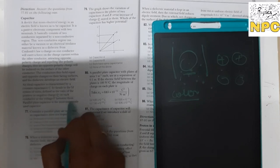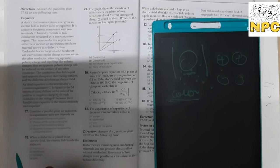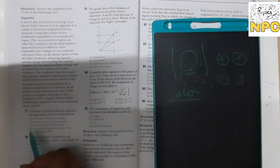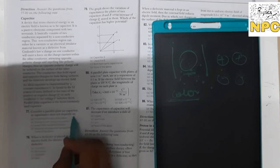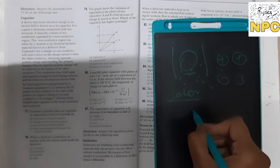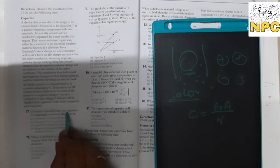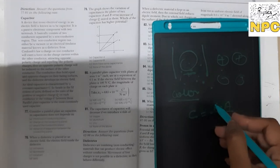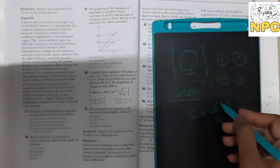The parallel plate capacitor is the most commonly used capacitor. For a parallel plate air capacitor, the capacitance formula is C equals epsilon-naught times A divided by D. When air is the medium, epsilon-naught is used. If a medium is introduced, the dielectric constant K also enters the formula.